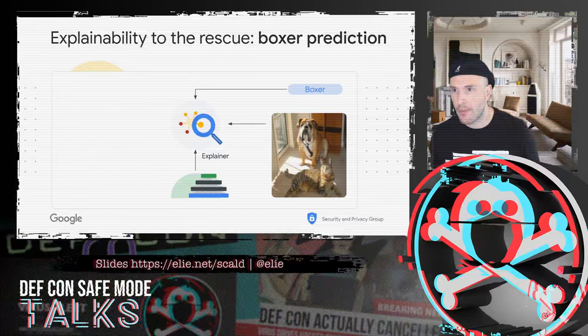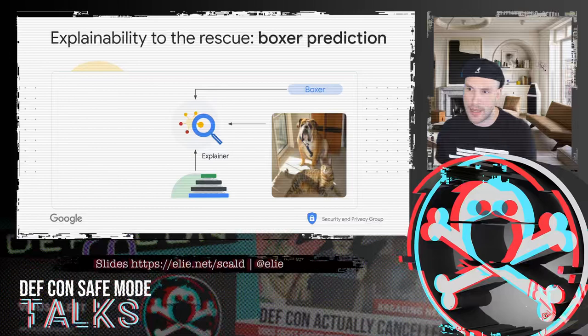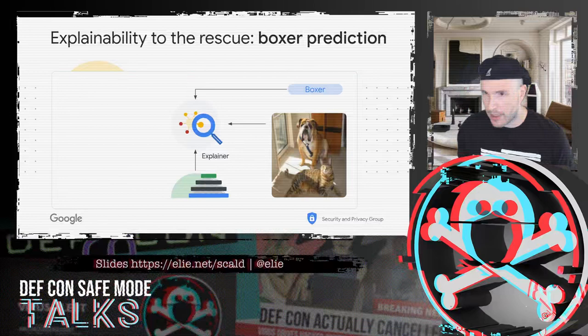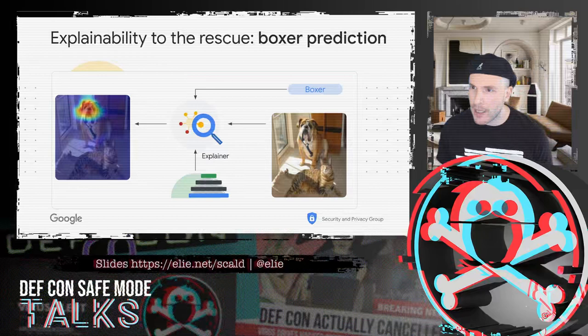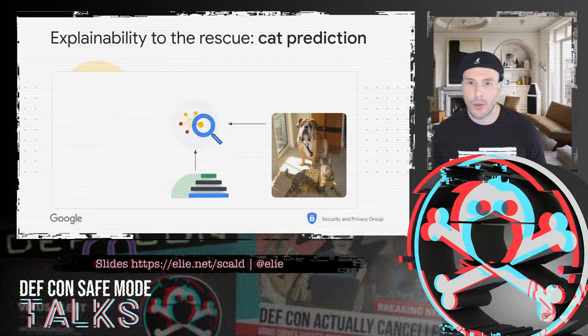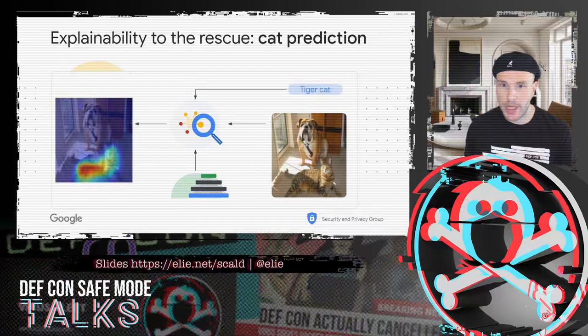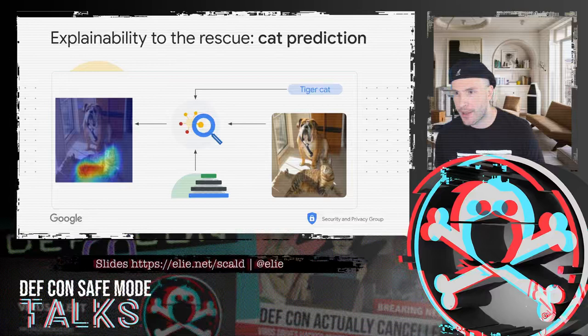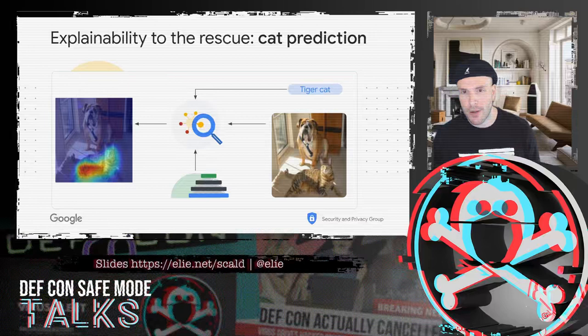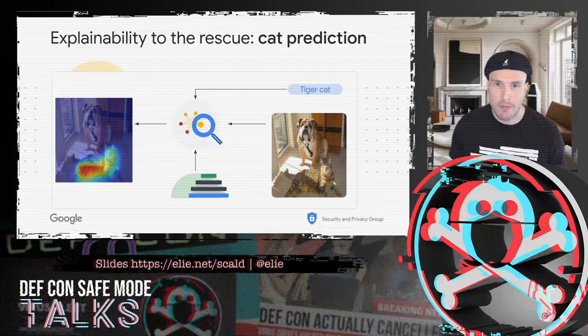We need for SCOLD to have models which work well — not necessarily 99%, but well enough — because we need examples of successful predictions to know what the model used. For example, you give it the picture and say: why did you believe it was a boxer? And it will tell you: I look at the face of the puppy and it's a boxer. Or for the cat: the reason why I think it's a cat is because there is a face of the cat, but most importantly there are stripes. Makes sense — a cat with stripes is probably a tiger cat.